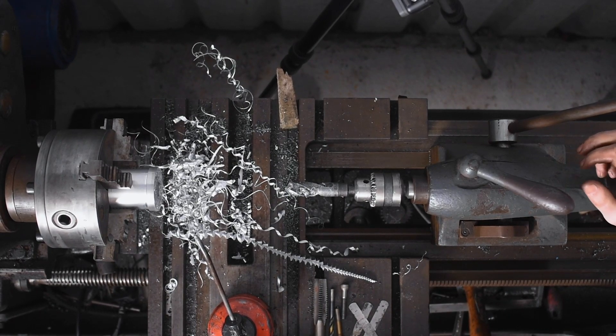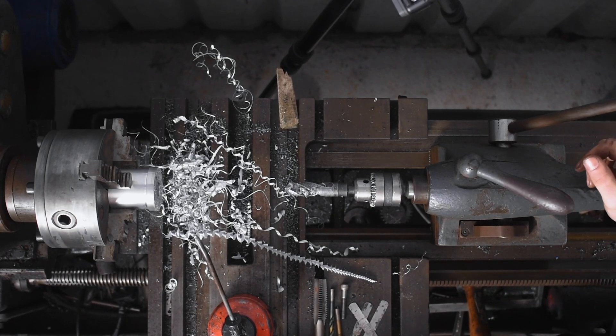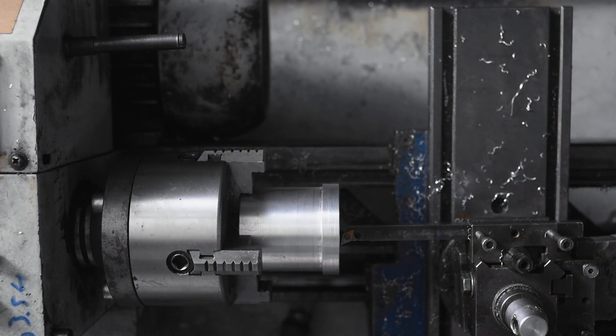We'll move back over now to the XL lathe, we'll get set up in the four jaw chuck again, and we'll bore this out to the 30 millimeters that it needs to be for the boring bar.